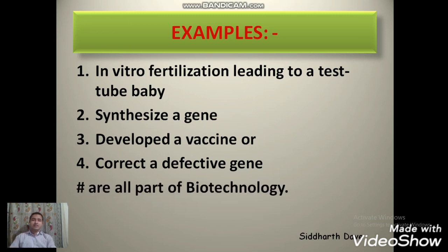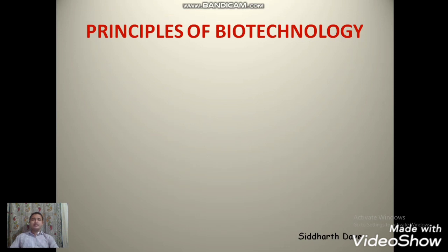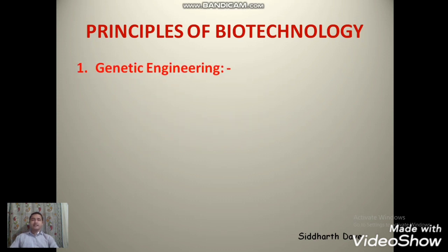These are the four examples given in your NCERT textbook. वैसे तो examples की बात करें तो बहुत सारे examples हैं, but we are focusing on your NCERT textbook. Now let us discuss one topic which is frequently asked for the two-mark question — Principles of Biotechnology. There are two principles of biotechnology. First is genetic engineering.